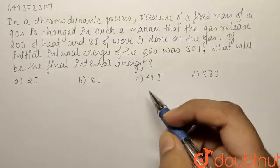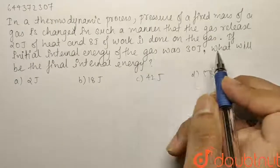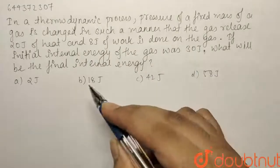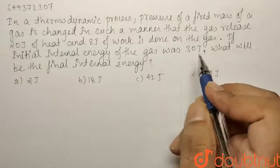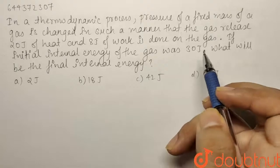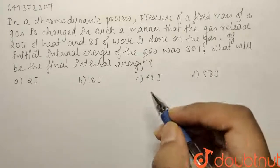Here we have a question from thermodynamics. In a thermodynamic process, pressure of a fixed mass of gas is changed in such a manner that the gas releases 20 joules of heat and 8 joules of work is done on the gas. If the initial internal energy of the gas was 30 joules, what is the final internal energy?